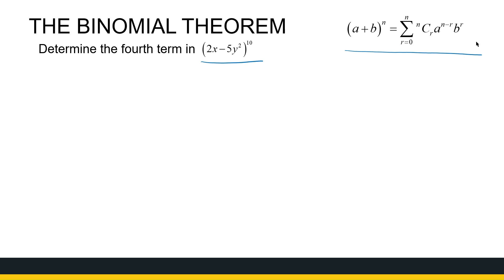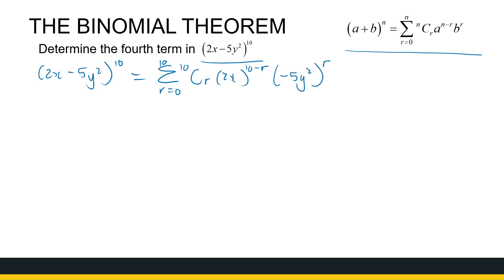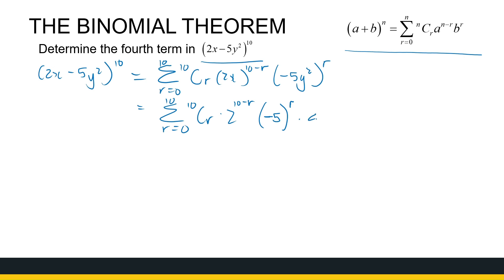So if I've got (2x − 5y²)^10, I know that equals the sum when r goes from 0 to 10 of 10Cr, times (2x)^(10−r), times (−5y²)^r. If we tidy this up, that is the sum of 10Cr times 2^(10−r) times (−5)^r times x^(10−r) times y^(2r). Just don't forget about the minus sign.